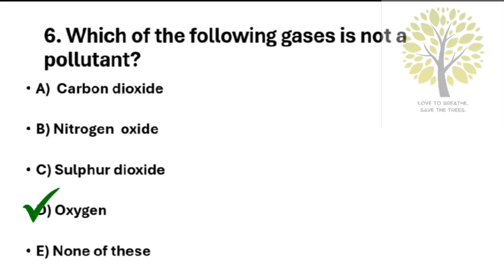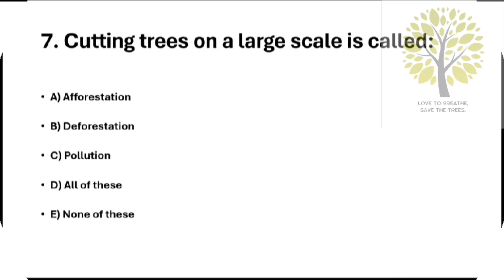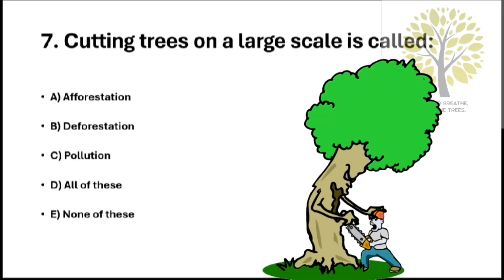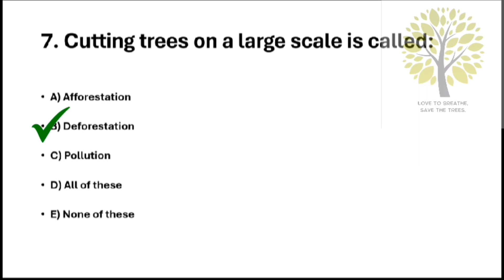Question number 7: Cutting trees on the large scale is called. Option A: Aforestation. Option B: Deforestation. Option C: Pollution. Option D: All of these. Option E: None of these. The answer is Option B, Deforestation.